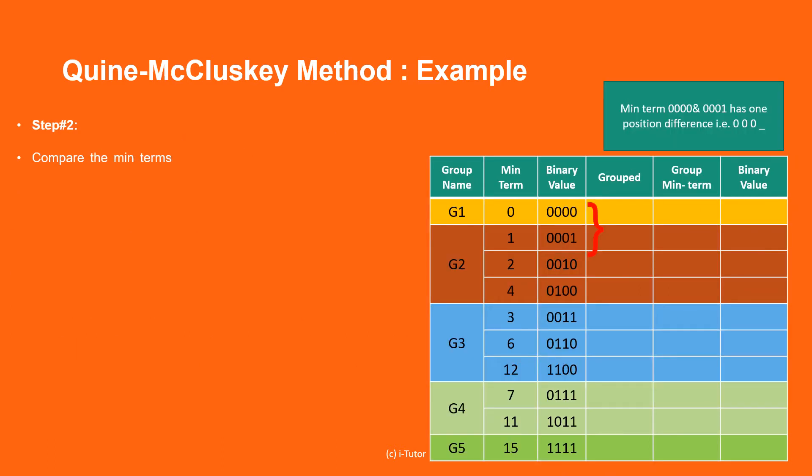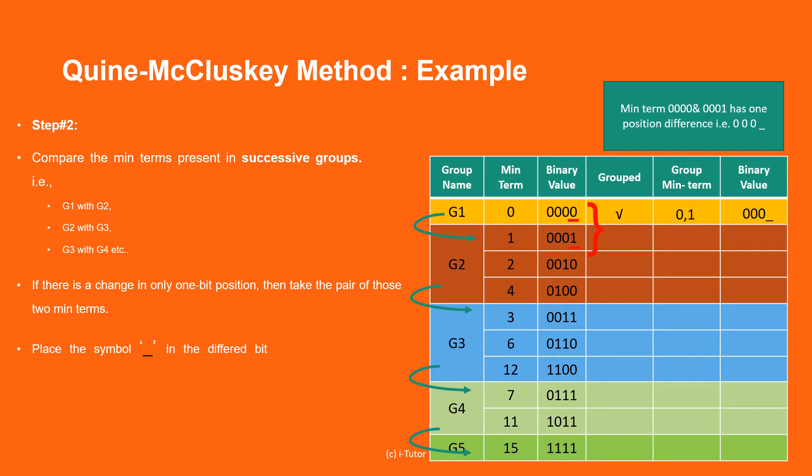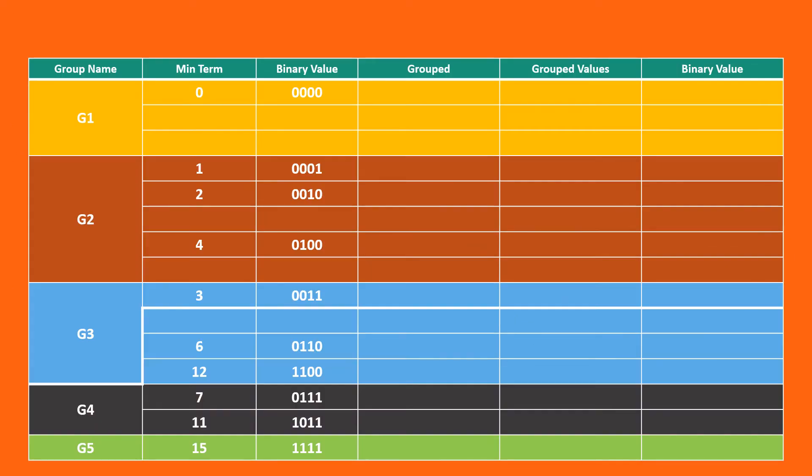Step two, compare the minterms present in successive groups. If there is a change in only one bit position, then take the pair of those two minterms. Place the symbol underscore in the different bit position and keep the remaining bits as it is. Let's finish the grouping as per the instruction we have seen earlier. At this point we would advise you to pause the video and try to complete the table yourself.